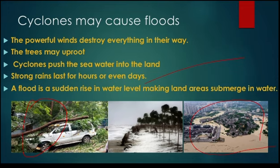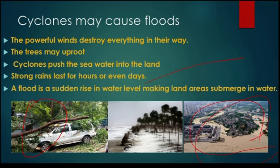The heavy rainfall and powerful winds destroy everything, and the overflowed water moves towards the land — that is how a flood forms. When the water moves towards the land and the land area becomes submerged in water, that is a flood. I hope you have all learned what cyclones are and how cyclones cause floods. We will learn the next concept in the next class. Thank you, enjoy learning.